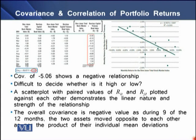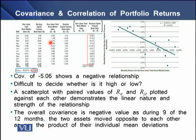On the screen we have certain data showing individual returns for the Dow Jones stock market index and the Barclays Capital Treasury Bonds. We have an index value for stocks and an index value for bonds on a monthly basis for a year. We have mean deviation for the stock market and mean deviation for the bond market, and when we multiply these two mean deviations, the sum of these values is known as the covariance.